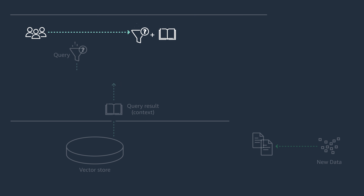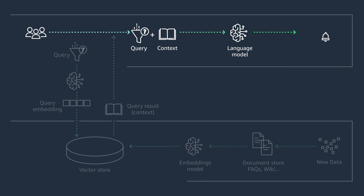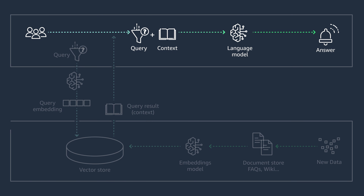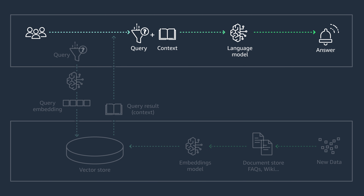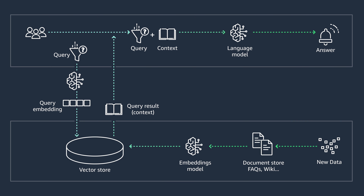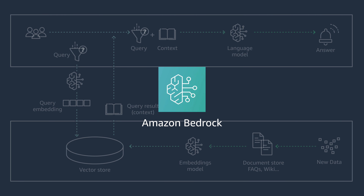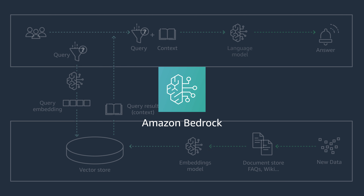Let's take a deeper look at an end-to-end RAG architecture leveraging AWS services. First, you start with the selection of a large language model. Some considerations to keep in mind are use cases, context length, hosting, training data if applicable, customization, and license agreements. For this, you can use Amazon Bedrock, which is a fully managed service that offers a choice of high-performing foundation models from leading AI companies via a single API.